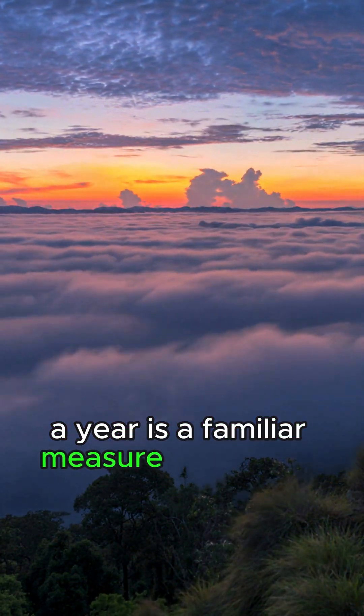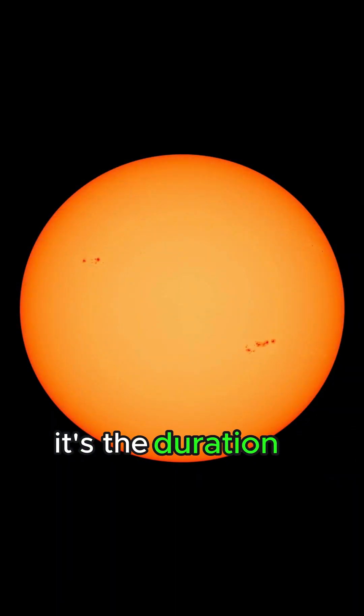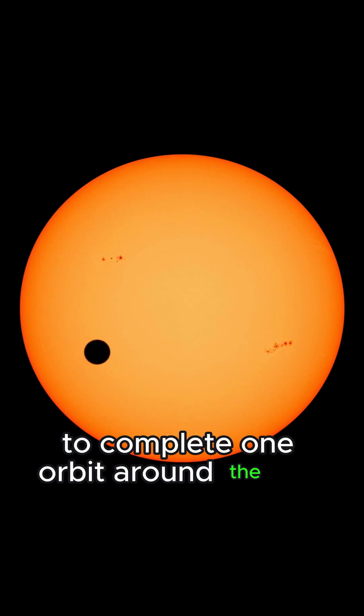A year is a familiar measure of time on Earth. It's the duration it takes for our planet to complete one orbit around the sun.